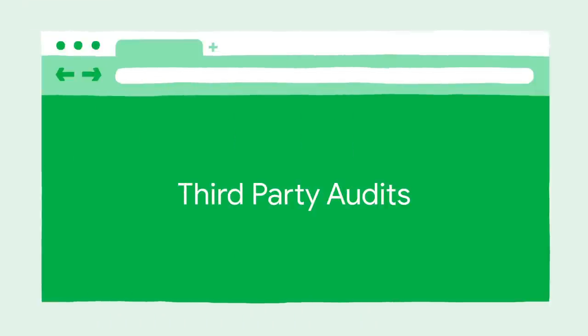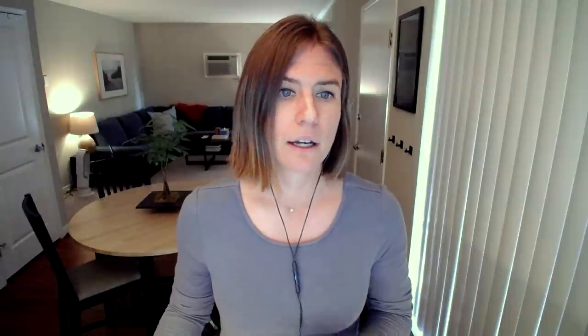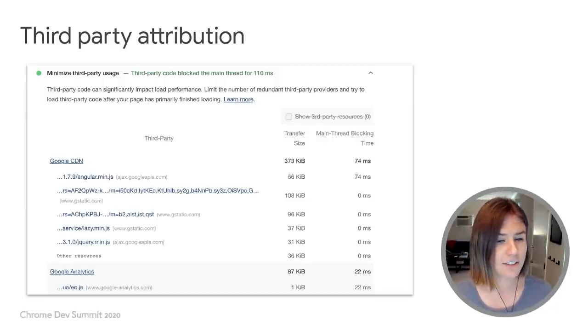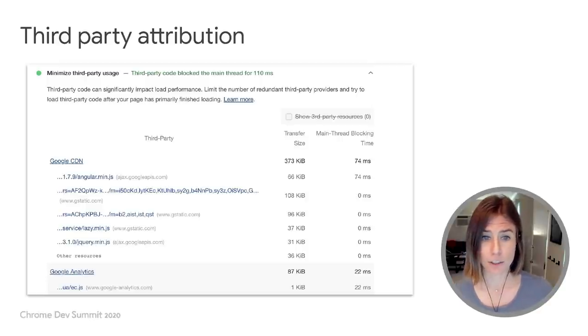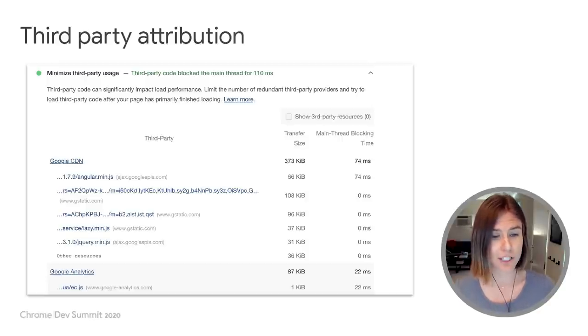Switching gears a little bit to third-party audits. We know that a big part of web experiences are delivered using third-party code, and developers don't have as much transparency or control over the performance impacts as is ideal. Third-party services can deliver a lot of value, but they can also come with performance costs. Our goal is to make those costs as transparent and attributable as possible so that developers can make informed decisions and reason about trade-offs when choosing what to include in their sites.